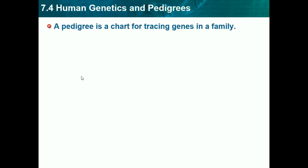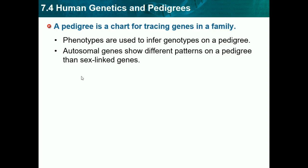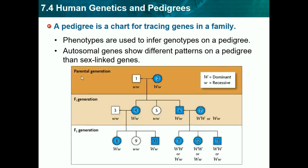A pedigree is a chart for tracing genes in a family. Phenotypes are used to infer genotypes on a pedigree chart. Autosomal genes show different patterns on a pedigree than sex-linked genes do. We mainly use pedigrees to look at sex-linked genes and to find out what traits are sex-linked versus autosomal.